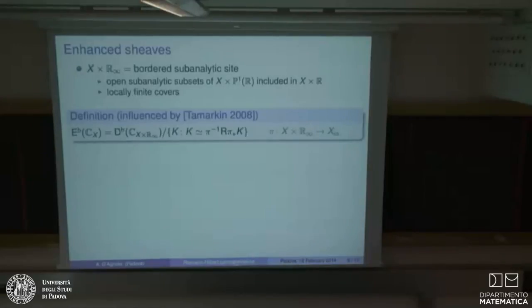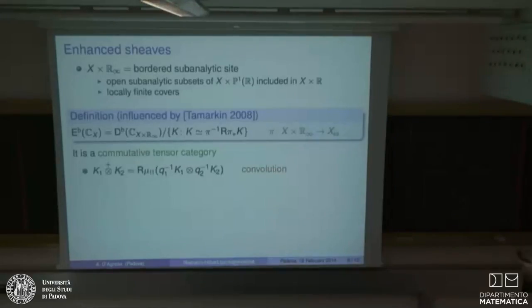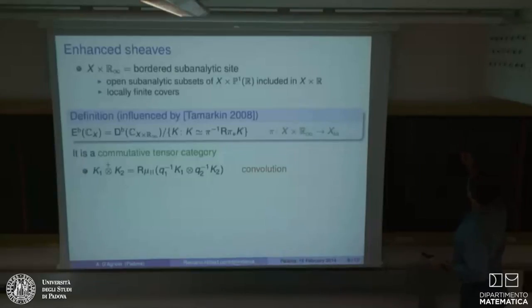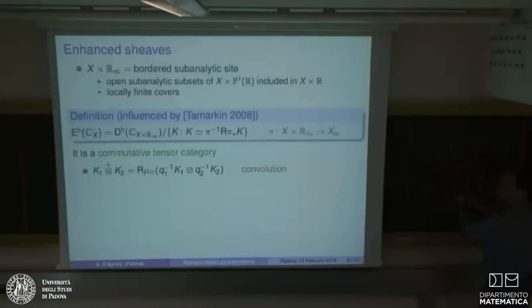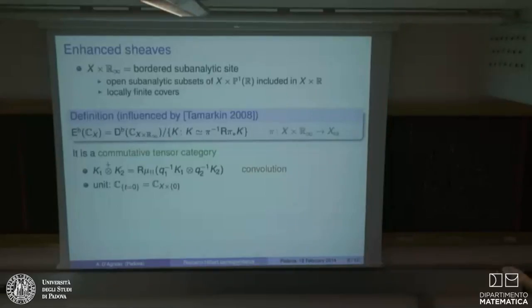Our definition is influenced by the recent work of Tamarkin on symplectic topology. We define a new category called the category of enhanced ind-sheaves: you take sheaves with one variable more, then quotient out by things locally constant along the fibers of the projection. This is a commutative tensor category where the tensor product is given by convolution. If you have R_∞ squared, you have three maps into R_∞: first and second projections, and the sum map mu(t₁,t₂)=t₁+t₂. Pulling back and pushing forward gives the usual convolution, and the unit is the delta function — the constant sheaf at the origin.